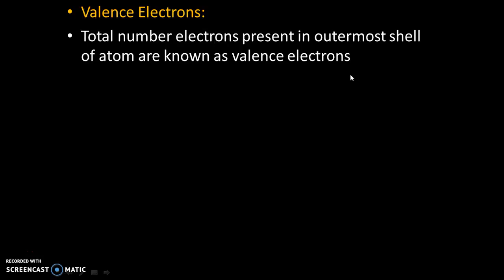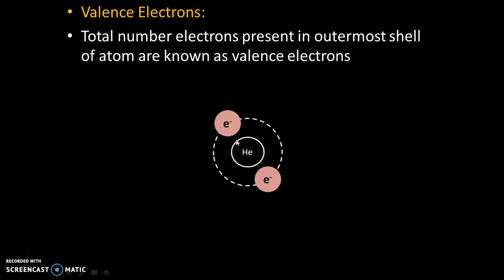Let's try to understand this with the help of an example. In the helium atom, there are overall two electrons in its outer shell. That's why helium atom has two valence electrons.